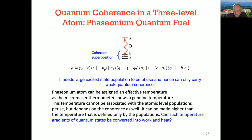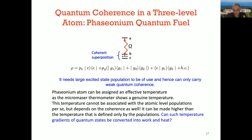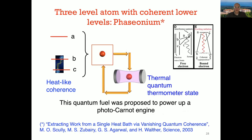Suppose you have an atom prepared in a hot oven at a certain temperature, so populations are thermally distributed. Then somehow you inject coherence ε between the lower levels. If you send this atom into the cavity, the cavity will not equilibrate with the oven temperature — it will reach a higher temperature. The next question Scully and co-workers — Agarwal, Walther, and Zubairy — asked was: if I have a temperature gradient between the oven and the cavity thanks to coherence, can I convert this difference into useful work? They designed a device called the photo-Carnot engine.